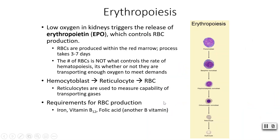Low oxygen levels are what trigger the kidneys to release EPO, and erythropoiesis can take anywhere from five to seven days. Interestingly, it is not the number of red blood cells but rather how much oxygen we have in our bodies that controls erythropoiesis. So if you lose a little bit of blood but your oxygen levels are still normal, you aren't necessarily going to rush to replace it. We start with that hemocytoblast, and about halfway through the process you end up with a reticulocyte — an immature red blood cell — which eventually becomes a fully matured red blood cell.